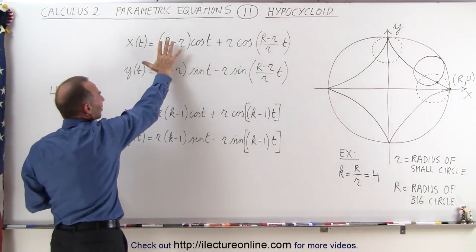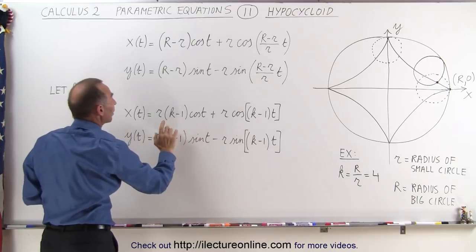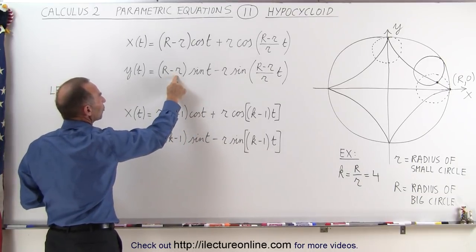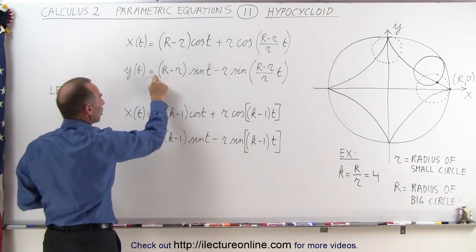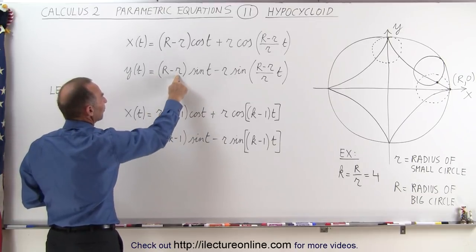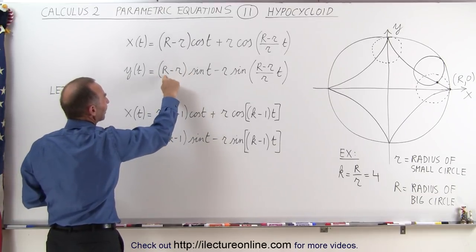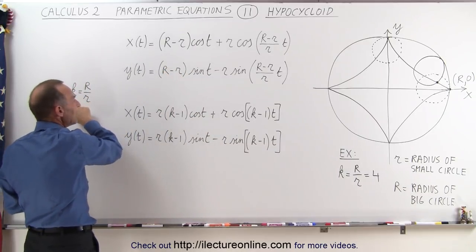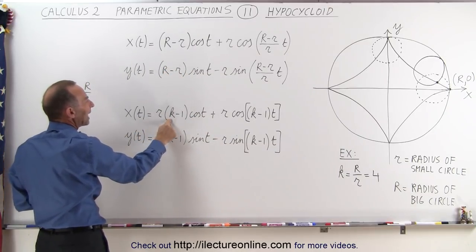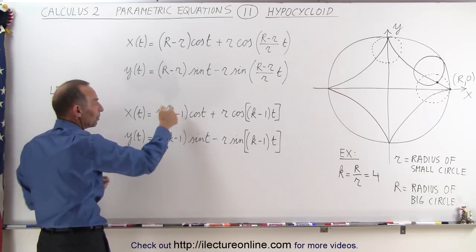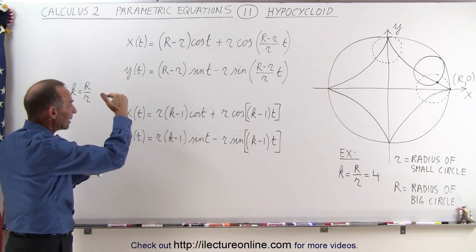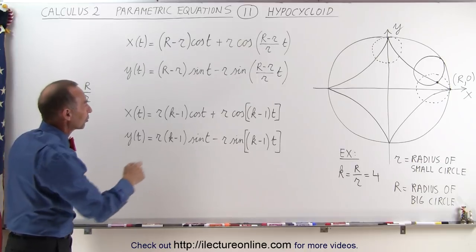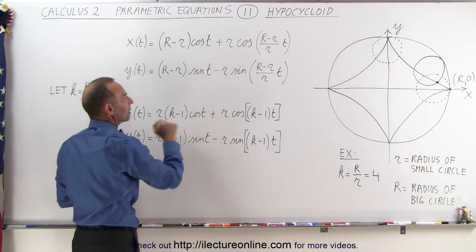So the way we can go from this set of equations to this set of equations is to factor out a small r. When we do that we put the small r in front and if we divide this by r we get 1, divide this by r, small r we get big R over small r which is k. So then we get r times (k-1). Again, k is simply the ratio of the large radius divided by the small radius times the cosine of the parametric variable t.